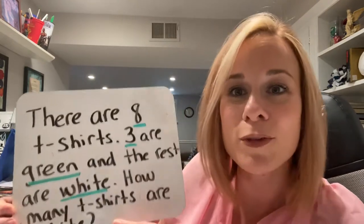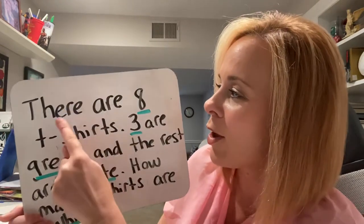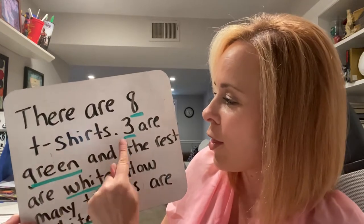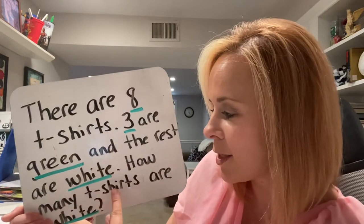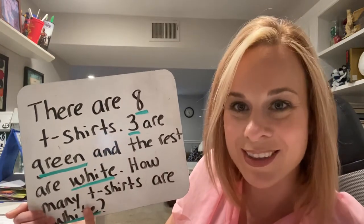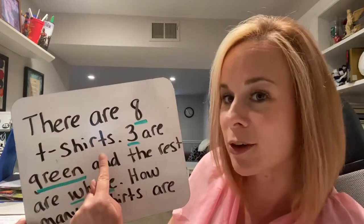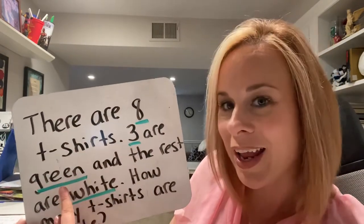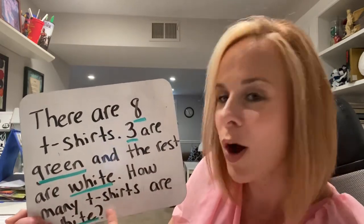So I'm going to read a little problem for you now. You're going to see little bits and pieces of information that I underlined, and that's going to help us solve it. I'm going to read it through twice slowly and then you guys are going to try to help me solve this. There are eight t-shirts; three are green and the rest are white. How many t-shirts are white? I'm going to read this again slowly: there are eight t-shirts, three are green and the rest are white. How many t-shirts are white?